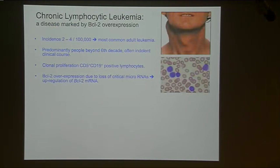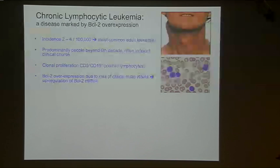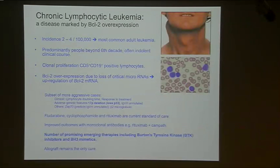One disease that is very well characterized by BCL2 overexpression is chronic lymphocytic leukemia — the most common of all leukemias. In that disease, the primary reason for high levels of BCL2 is loss of the critical microRNAs that regulate BCL2 expression, leading to upregulation of BCL2 mRNA and accumulation of these very abnormal lymphocytes. Although in the majority of people this is not a very aggressive disease, the treatment is mainly supportive — cytotoxic drugs such as fludarabine and cyclophosphamide — and over the last 10 years the major difference has been the introduction of the CD20 monoclonal antibody rituximab.